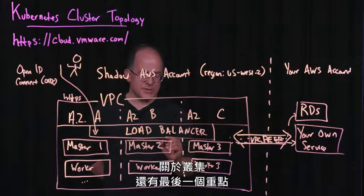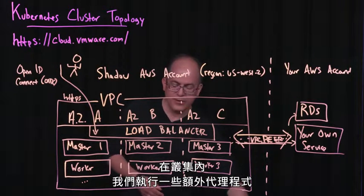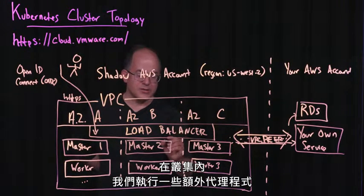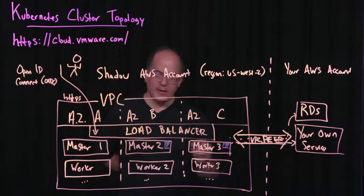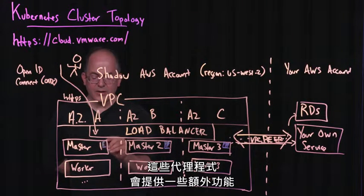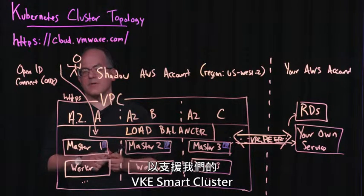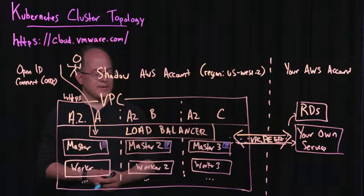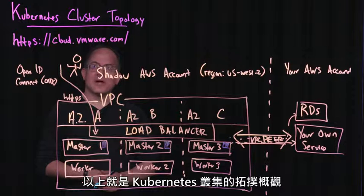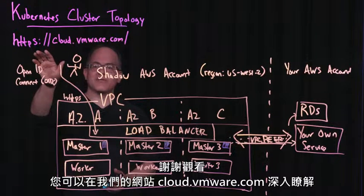One last comment: within a cluster, we are running a few extra agents on the Kubernetes cluster. These are providing a little bit of extra functionality to support our VKE smart clusters, which allow auto-scaling and automatic recovery of failed nodes. And that's what the topology of our Kubernetes clusters looks like. Thank you — you can learn more at our website, cloud.vmware.com.